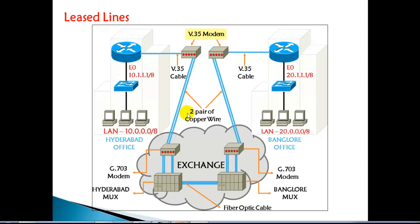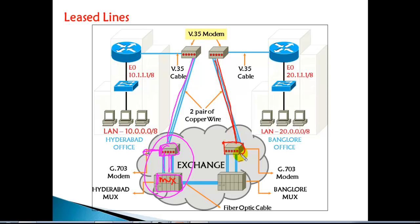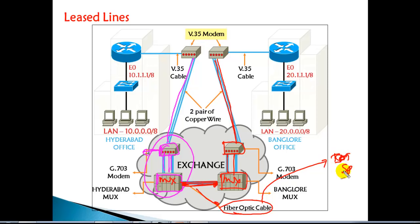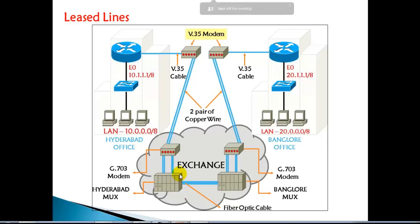From the modem onward, the service provider boundary starts. The service provider will have a two-pair wire going and connecting to the nearest exchange office. There they use G.703 modems — long-distance modems — and from there it connects to a big device called a MUX, a multiplexer. The same setup exists on the other end. From MUX to MUX there is a pre-existing fiber cable laid by the service providers, connecting major cities, countries, and exchange offices.